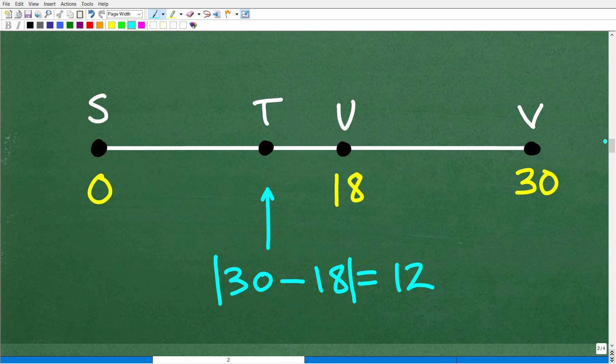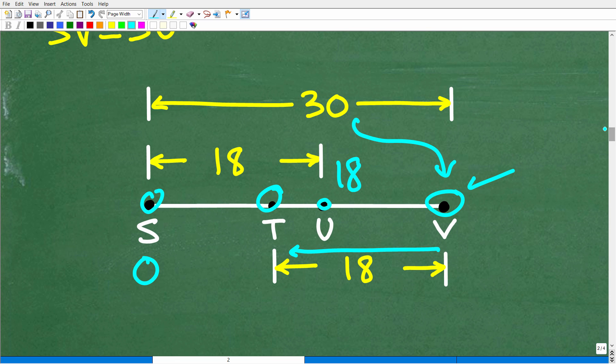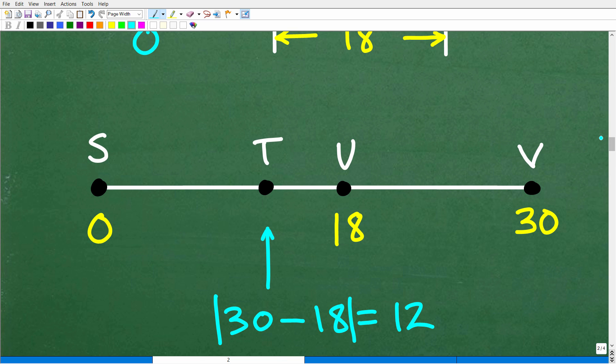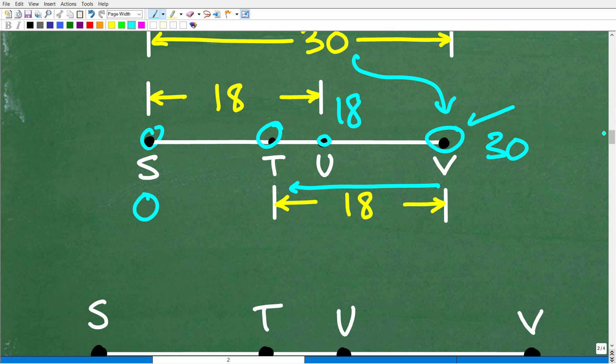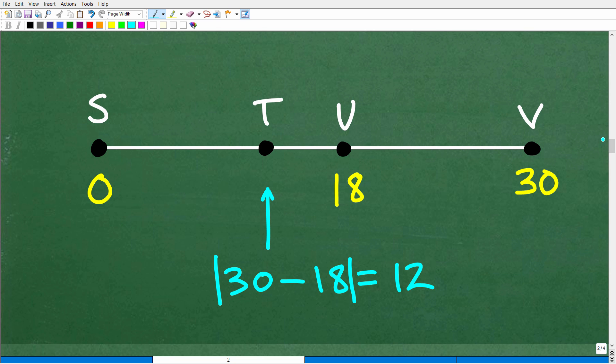And again, we're going to think of this as a number line situation. So S would be zero. U is at 18. V, point V here, is 30 units away from point S. So indeed, this would be 30. So we have zero, 18, and 30. And going back over here to this diagram, we know that T is located 18 units away from point V, which is, of course, 30. So we can easily find that by subtracting 18 from 30. That's where point T is going to be.